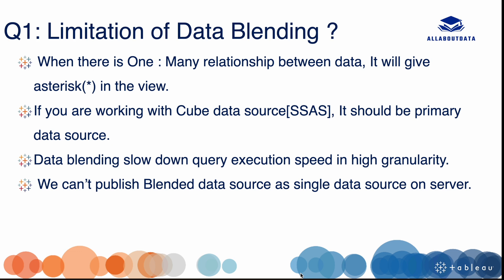Data blending slows down query execution speed at higher granularity. This is because data blending aggregates the data first and then combines it. So if we have higher aggregation it will work fast, but at higher granularity it will slow down query execution. The last limitation is we can't publish a blended data source as a single data source — if we have multiple data sources, we have to publish all of them individually and then use data blending between them.